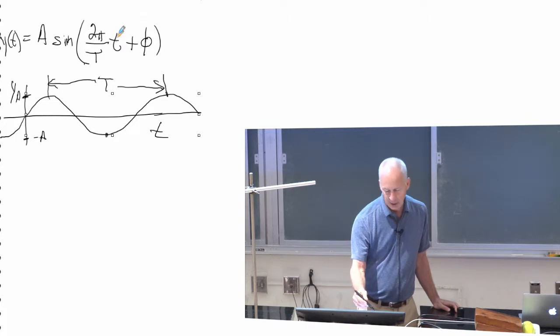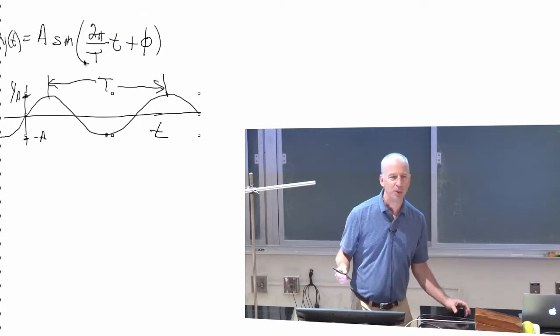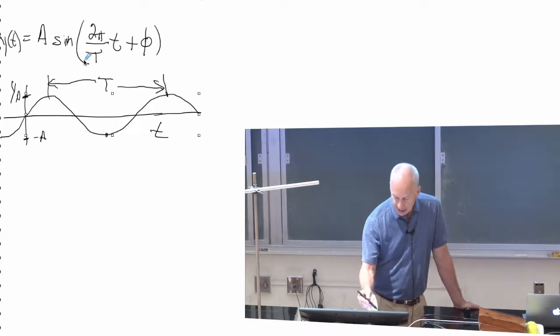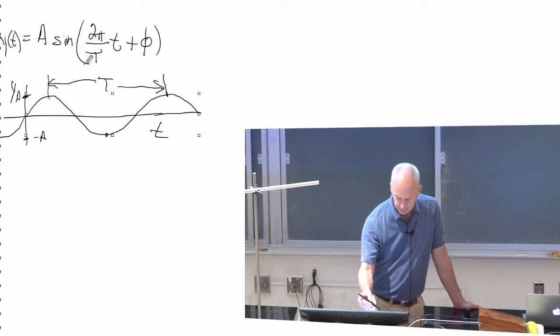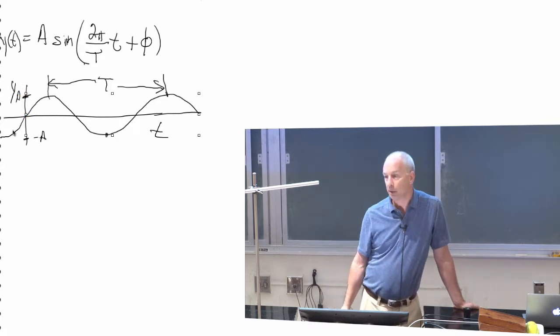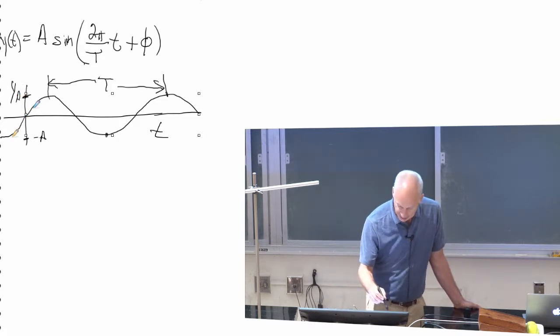What if I pick T equals zero? When you're trying to figure out what phi is, it's often useful to look at T equals zero. At time T equals zero, this part is zero. If I look at this graph here, Y better be zero, and headed upward.